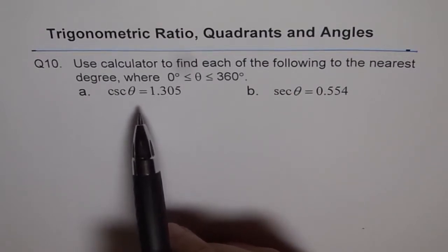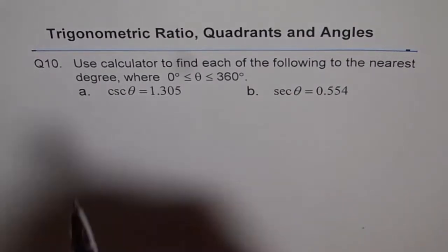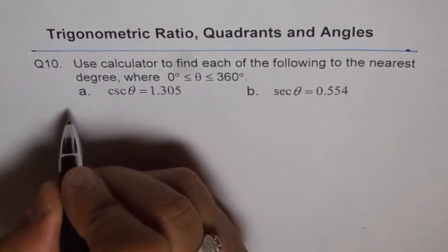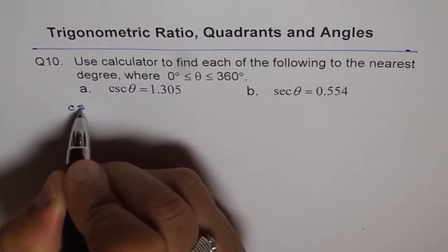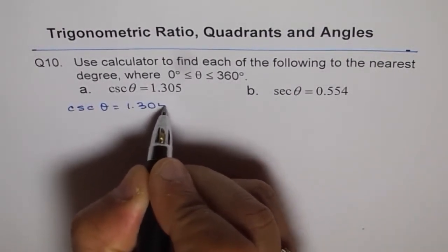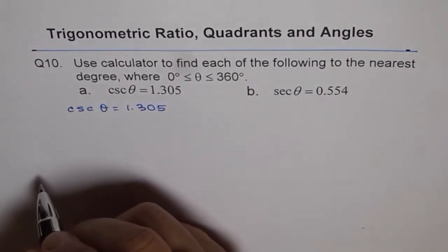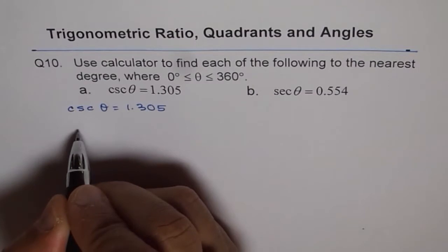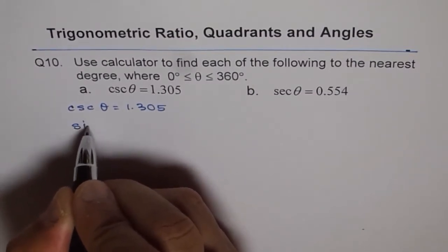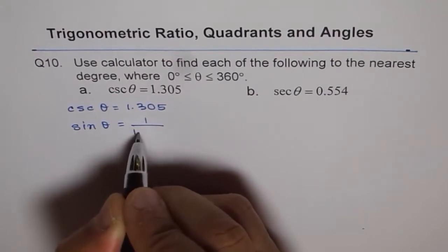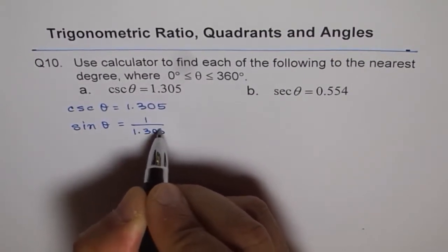Here is how I will do it. Now, cosecant theta equals 1.305. So we'll write cosecant theta equals 1.305. Now, cosecant is reciprocal of sine. So sine theta will be equals to 1 over 1.305. Is that okay?